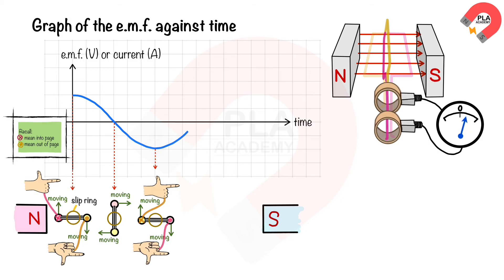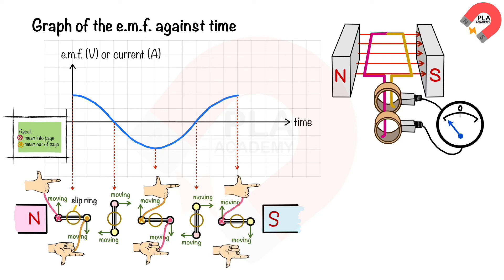The induced EMF then decreases to zero again when the coil is vertical after 270 degrees of rotation. The induced EMF then increases to its maximum again when the coil returns to horizontal position after 360 degrees of rotation. The induced current in the pink coil is into the page and the induced current in the yellow coil is out of the page.